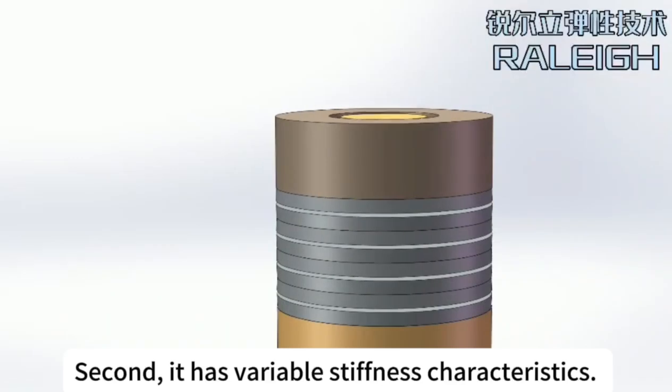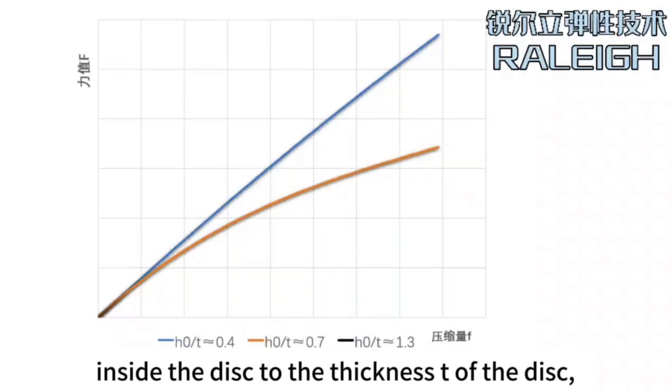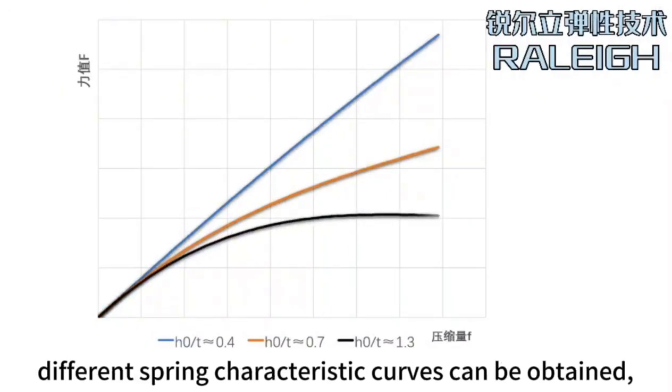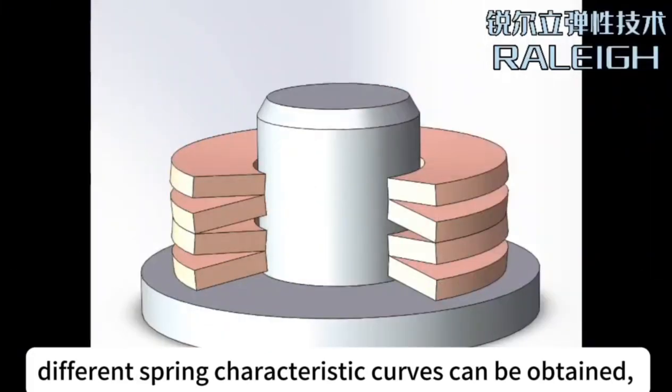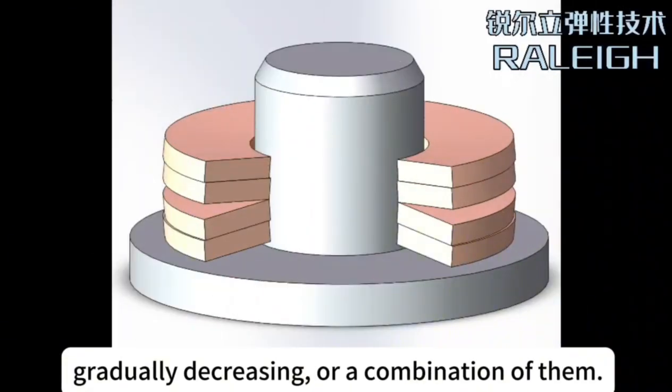Second, it has variable stiffness characteristics. By changing the ratio of the truncated cone height h, or inside diameter d to the thickness t of the disc, different spring characteristic curves can be obtained, which can be linear, gradually increasing, gradually decreasing, or a combination of them.